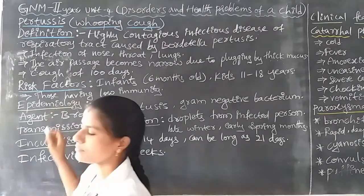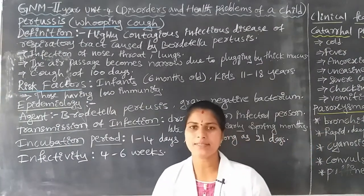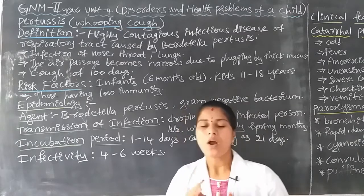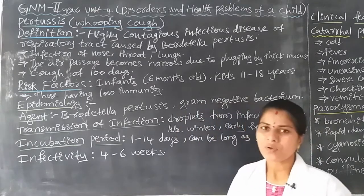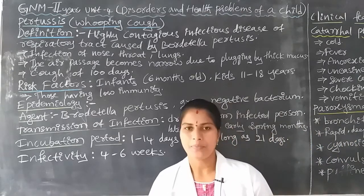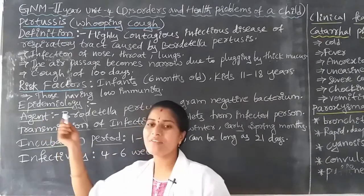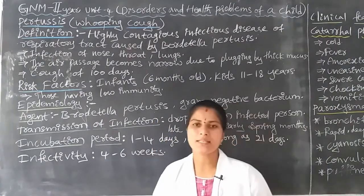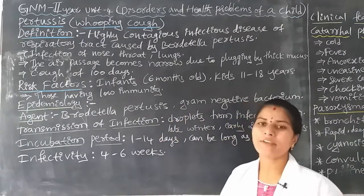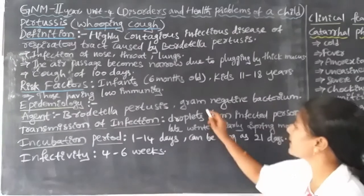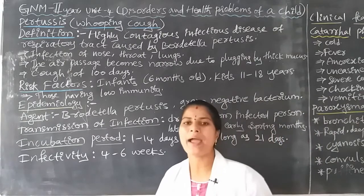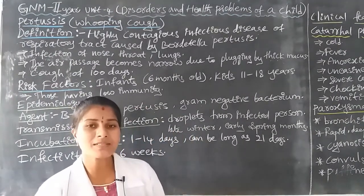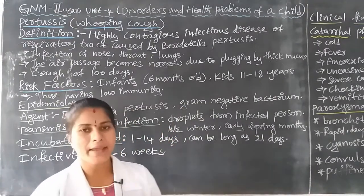Next is epidemiology — the distribution and severity of the disease, what medications to provide, and the disease concentration. The causative organism, or agent, for pertussis is Bordetella pertussis, which causes whooping cough in children. It is a gram-negative bacillus — gram-negative bacteria. This is the agent responsible for whooping cough.